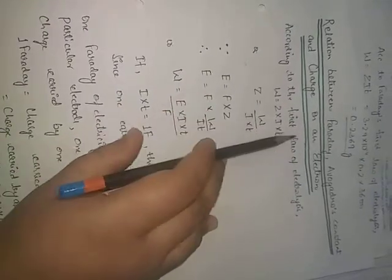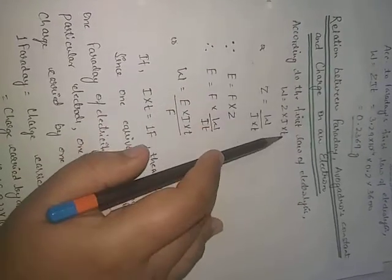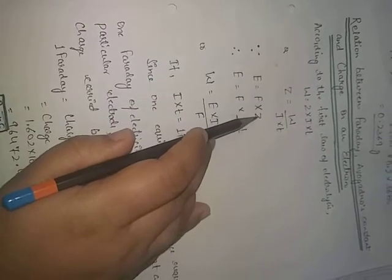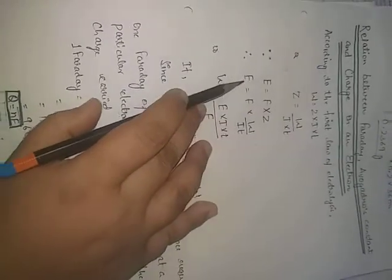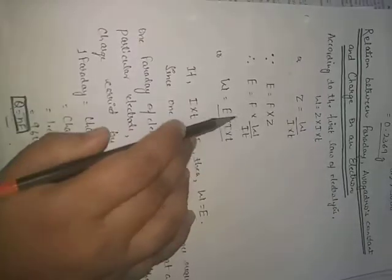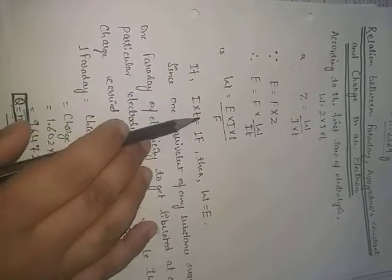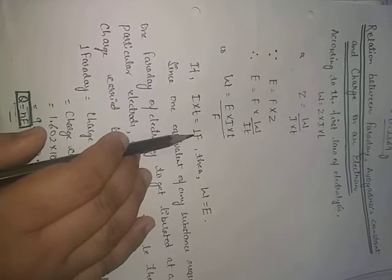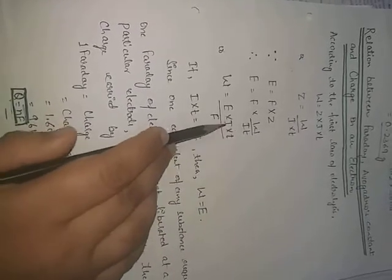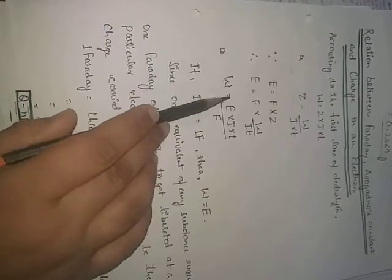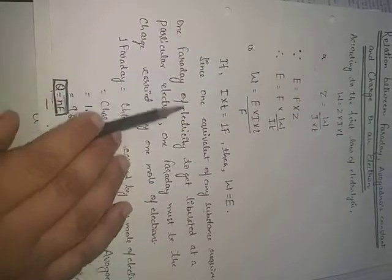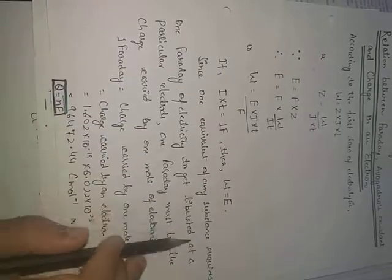Now let's look at the relation between Faraday's constant, Avogadro's constant, and charge on an electron. According to the first law, W = ZIT, and since E = F×Z, substituting gives W = E×I×T / F. When I×T equals one Faraday, W equals E — meaning one equivalent of any substance requires one Faraday of electricity to get liberated at an electrode.